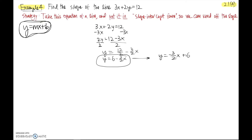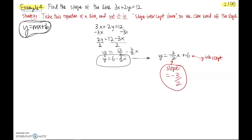Here we have two important pieces of information. The slope is −3/2, and the y-intercept is 6. They only ask for slope, so the answer is m = −3/2. The slope is definitely just −3/2, not −3/2 times x.